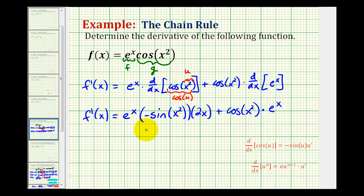So here's our derivative. Let's see if we can clean this up a little bit. This first product would be negative 2x e to the x sine x squared, plus this would be e to the x cosine x squared.